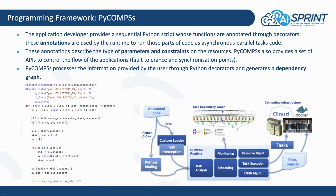PyCOMPS is a programming framework developed by BSC where the application developer provides sequential Python scripts whose functions are annotated through decorators. Those annotations are then used by the runtime to run parts of code as asynchronous parallel tasks. The annotations describe the type of parameters and constraints on resources — for example, computing units. PyCOMPS also provides a set of APIs to control the flow of application execution, benefiting from fault tolerance and synchronization mechanisms.